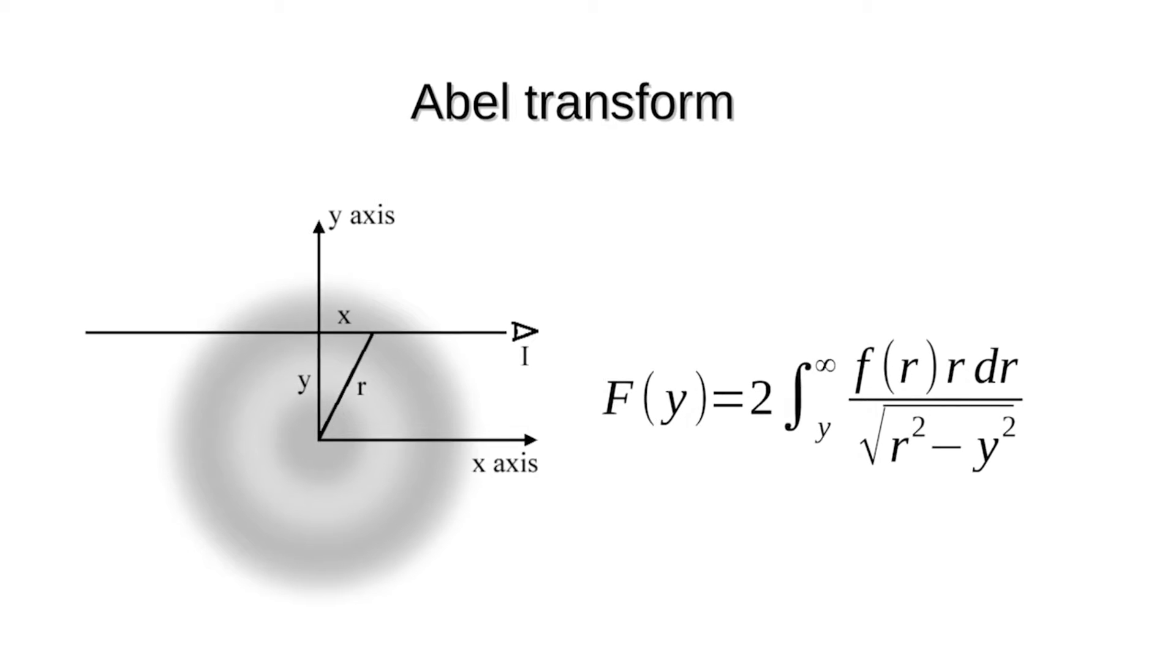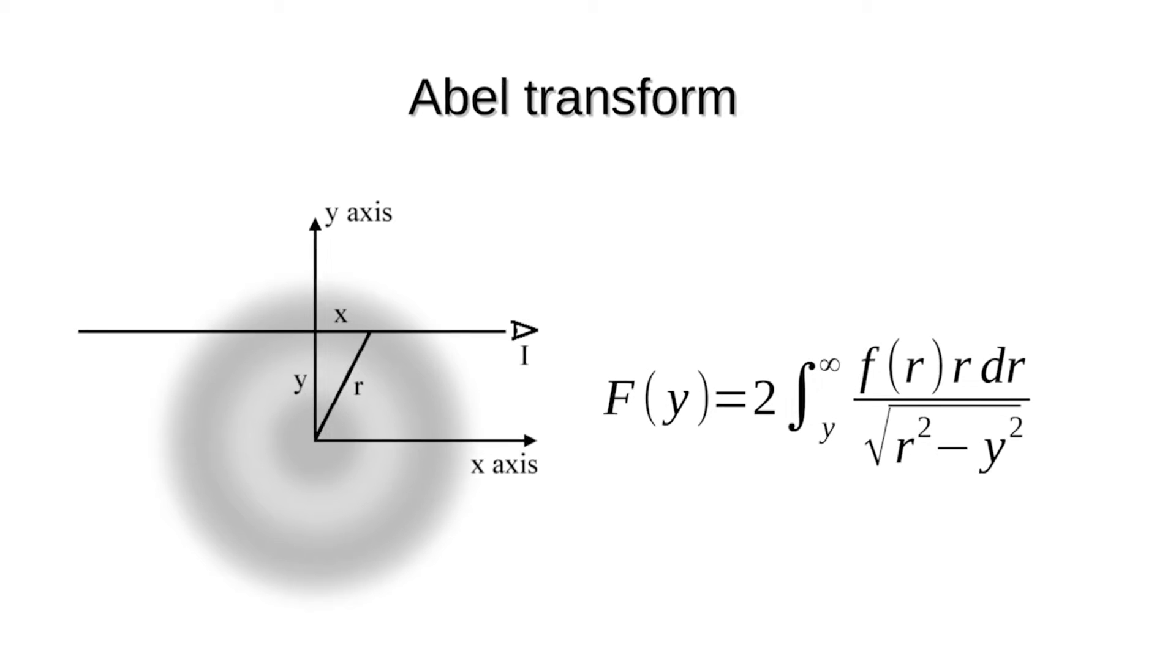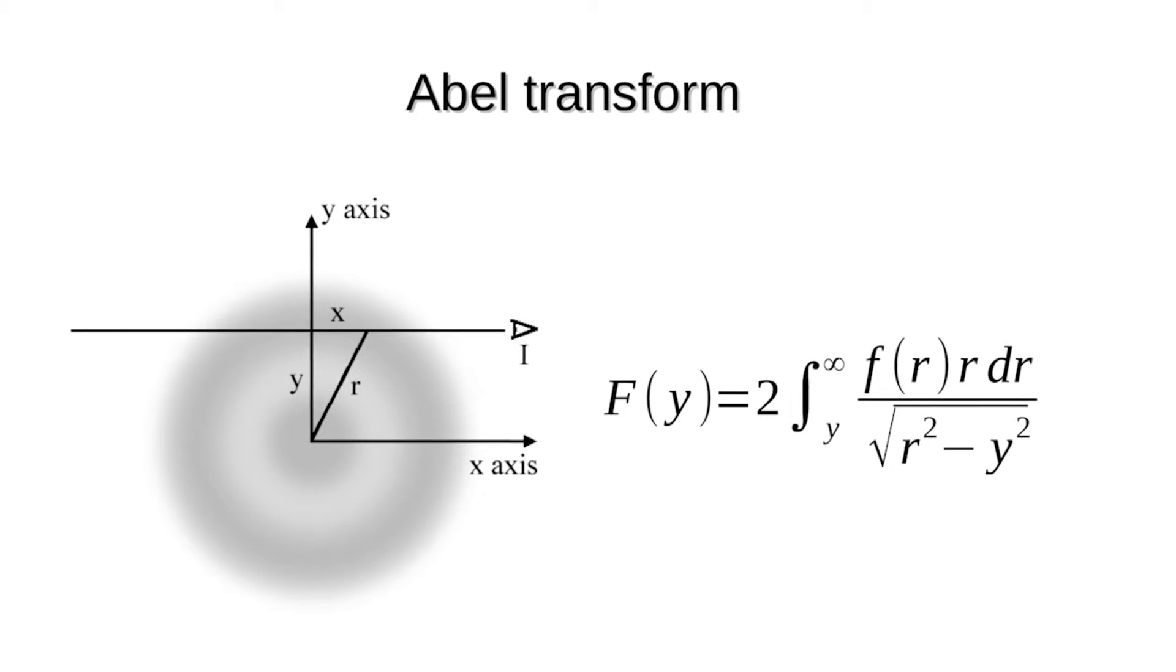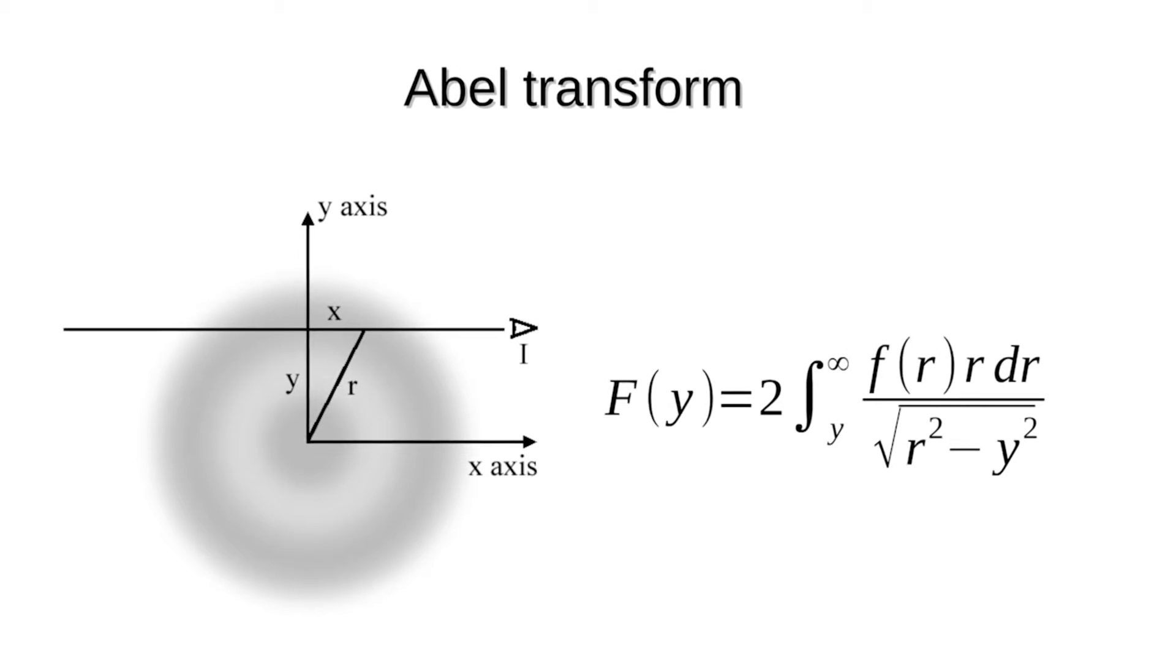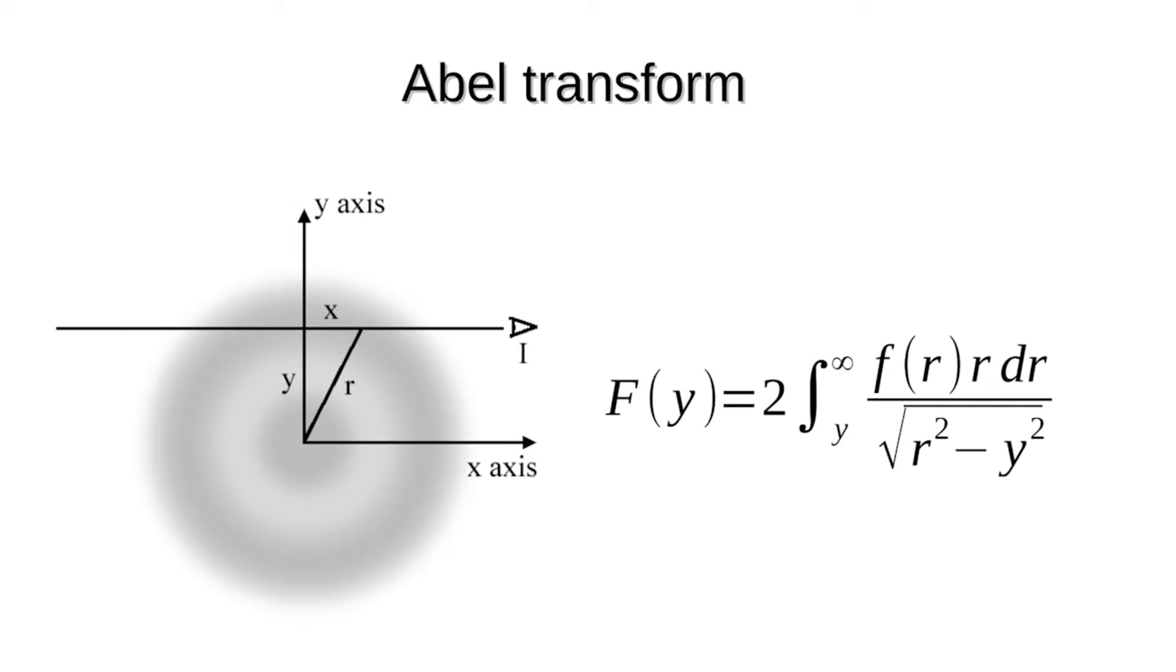The transformation from the three-dimensional to the two-dimensional distribution is called the Abel Transform, named after the mathematician Niels Henrik Abel. Here on the screen, you can see the expression. It represents the integration along straight lines cutting through the three-dimensional distribution.